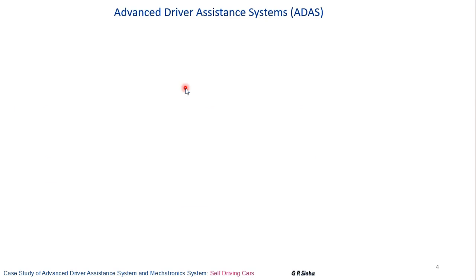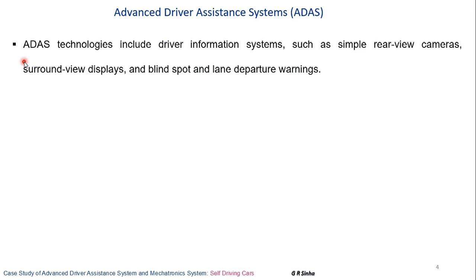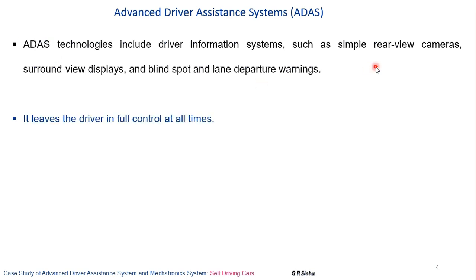The Advanced Driver Assistance System, ADAS, is a system which can help drive the car with an automated, well-controlled, and monitored system. ADAS technologies include driver information systems such as simple rear-view cameras, surround view displays, and blind spot and lane departure warnings. The ADAS leaves the driver in full control at all times.